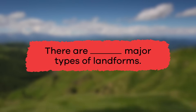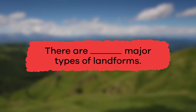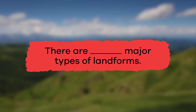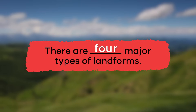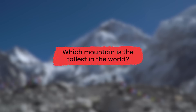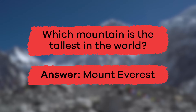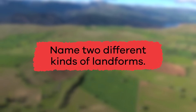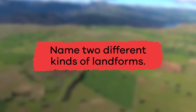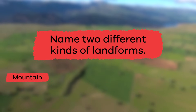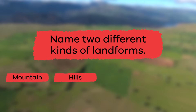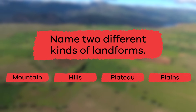Fill in the blank: There are blank major types of landforms. Did you say four? Great job! Which mountain is the tallest in the world? Did you remember that it was Mount Everest? Name two different kinds of landforms. Mountains, hills, plateau, plains.